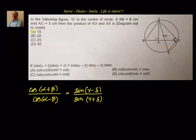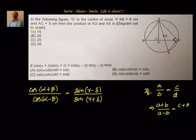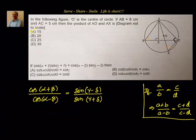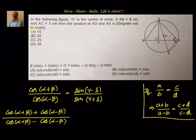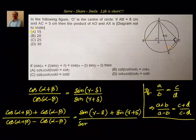Componendo and dividendo states: if A/B = C/D, then (A+B)/(A−B) = (C+D)/(C−D). Applying this: [cos(α+β) + cos(α−β)] ÷ [cos(α+β) − cos(α−β)] = [sin(γ−λ) + sin(γ+λ)] ÷ [sin(γ−λ) − sin(γ+λ)].